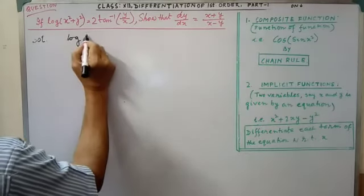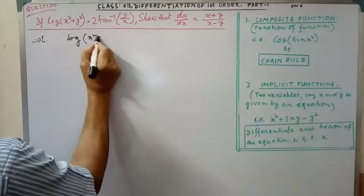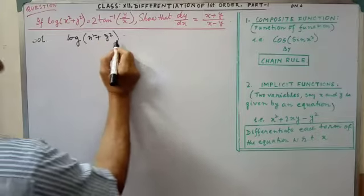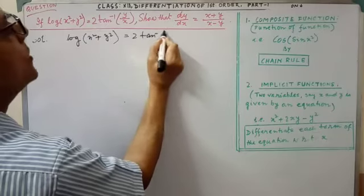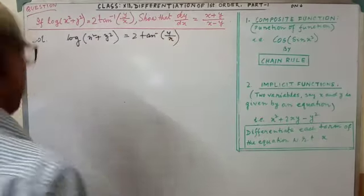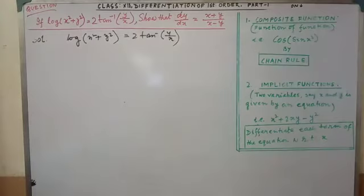Log x square plus y square equal to 2 tan inverse y by x.